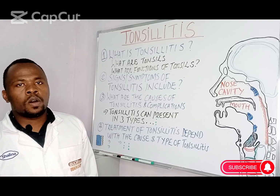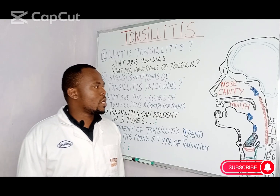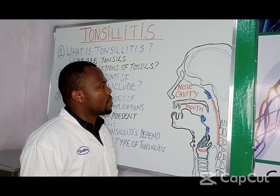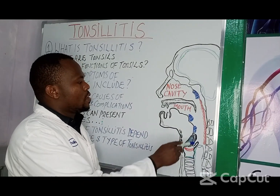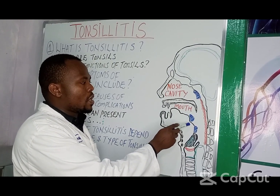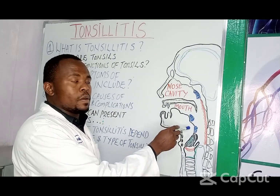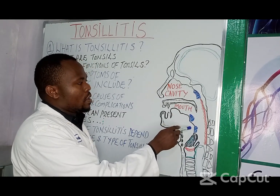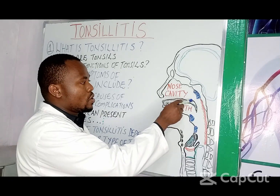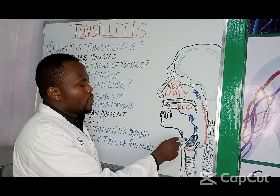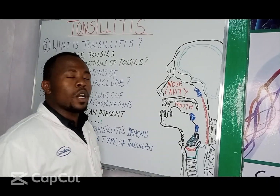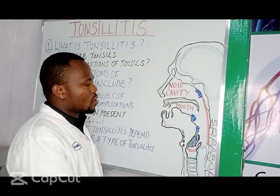Here is a diagram that I want to show you. What are the three types of tonsils? We have palatine tonsils, which are behind the mouth. We also have adenoids, which are located behind your nose. And we also have lingual tonsils, which are located on the root of the tongue.